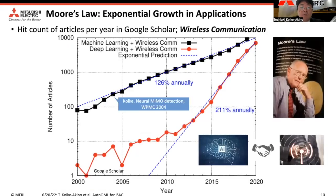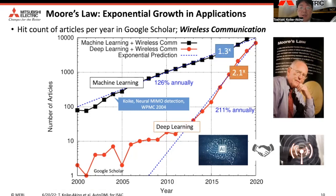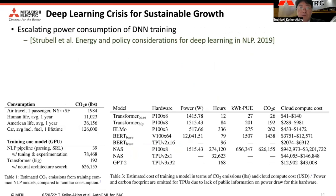When I counted the number of articles in Google Scholar, I discovered a Moore's Law exponential growth for the keyword pair of machine learning plus wireless communications, and deep learning plus wireless communications — more than doubling every year. However, the evolution of deep learning has a risk for sustainable growth.